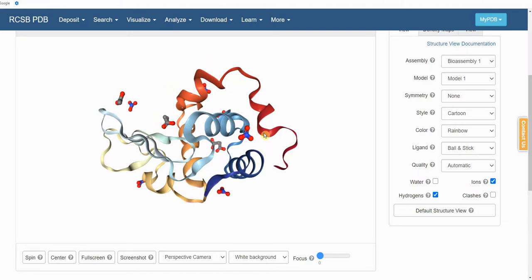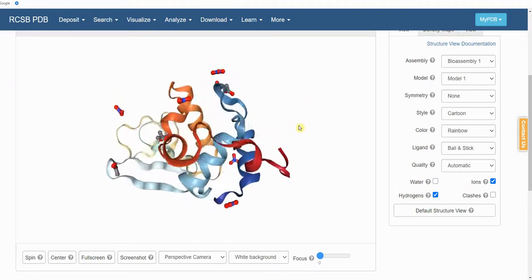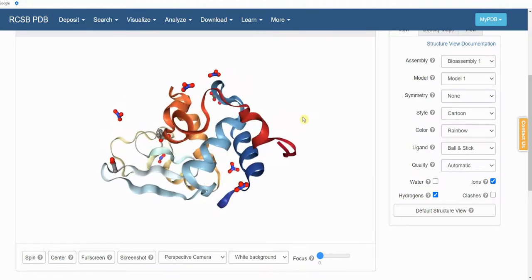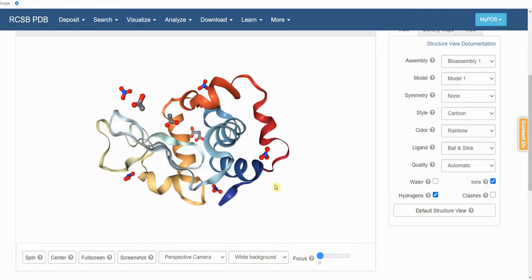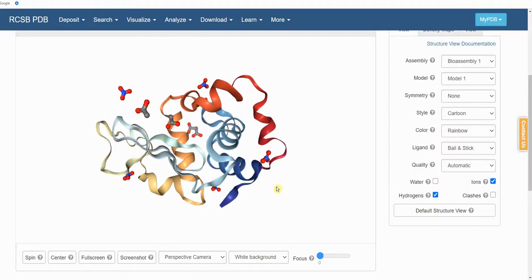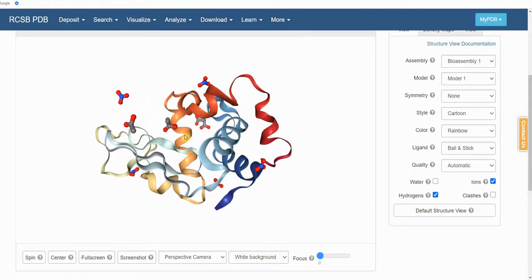So this type of structural information is extremely valuable for finding molecules that will affect the protein, the target protein. Here is the protein structure. We can now start to make educated guesses on what kind of molecule, drug molecule, might bind to this protein.